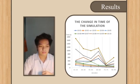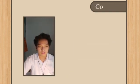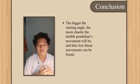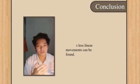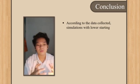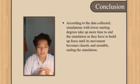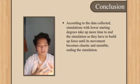A conclusion can be made. The bigger the starting angle, the more chaotic the double pendulum's movement will be, and thus less linear movements can be found. According to the data collected, simulations with lower starting degrees take up more time to end the simulation as they have to build up force until its movements become chaotic and unstable, ending the simulation.